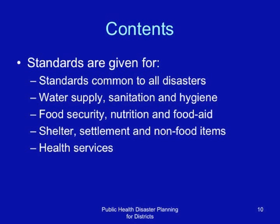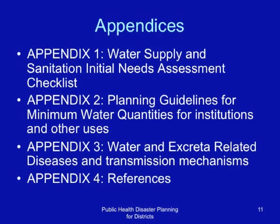The standards also include appendices. A water supply and sanitation needs assessment checklist is provided, as well as planning guidelines for minimum water quantities for institutions and other uses. There is also an appendix on water and excreta-related diseases and transmission mechanisms. The standards also give references.